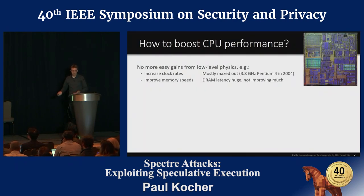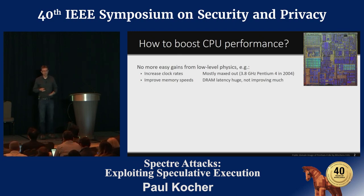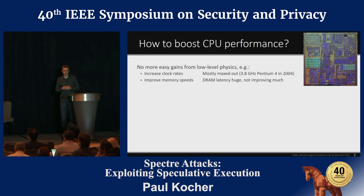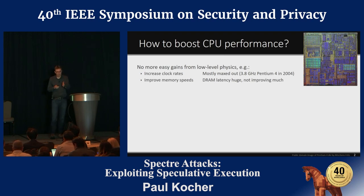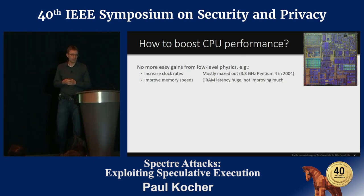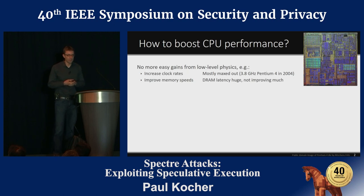If we look back at the history of making computers fast, there were some early years where it was actually really easy. You'd basically crank your clock rate up and your computer would run faster and faster — everything got faster at roughly the same proportion. But about 2004 or so, we pretty much hit the wall on clock rates, somewhere in that three-and-a-half to five gigahertz range. And another fundamental problem we've run into is around memory speeds — latencies just haven't gotten substantially better, just incremental improvements, nothing transformative.